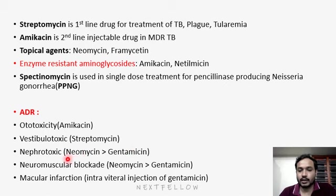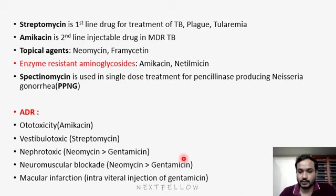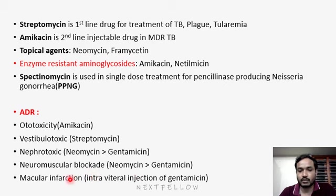Neuromuscular blockade occurs by blocking acetylcholine. The drugs causing this are neomycin first, followed by gentamicin. Macular infarction is seen in ophthalmic patients — if you give an intravitreal injection of gentamicin, it will lead to macular infarction.